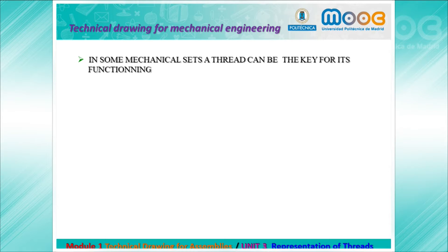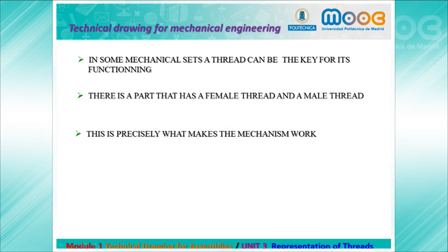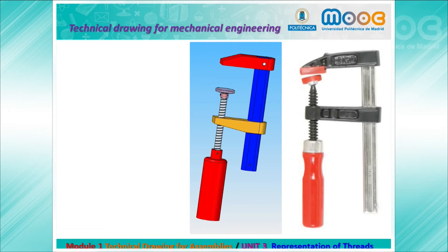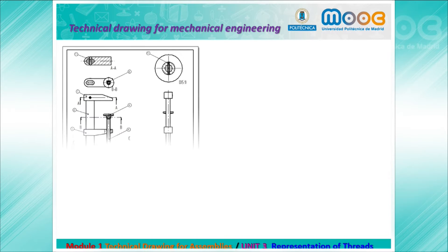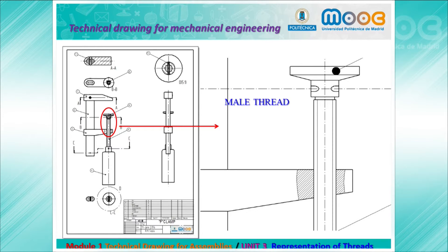In some mechanical sets, a thread can be the key to its functioning — one part has a female thread and another has a male thread, and this is what makes the mechanism work. Here, for example, we have an F-clamp. You can see the detail of the male thread, and the other part must have a female thread.